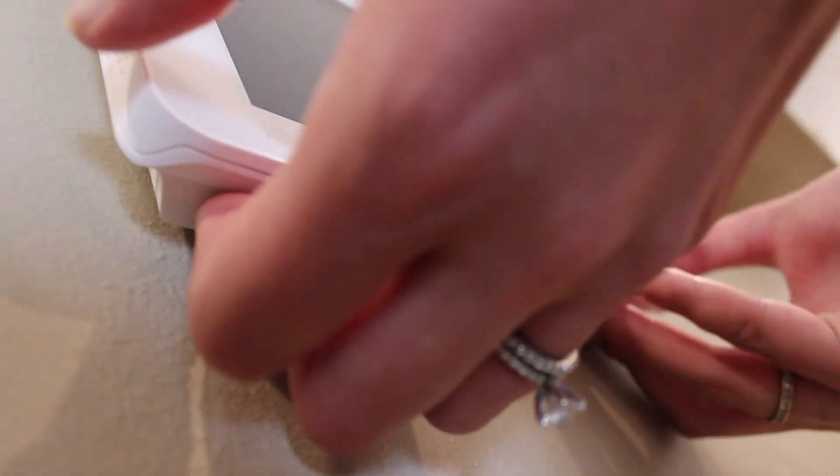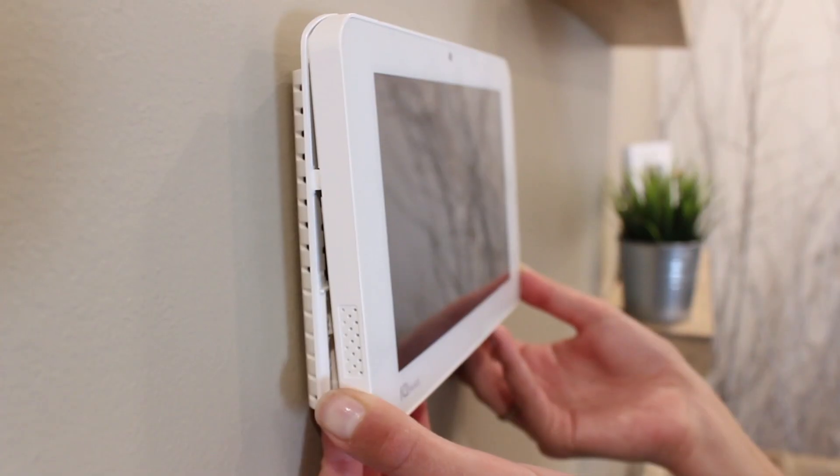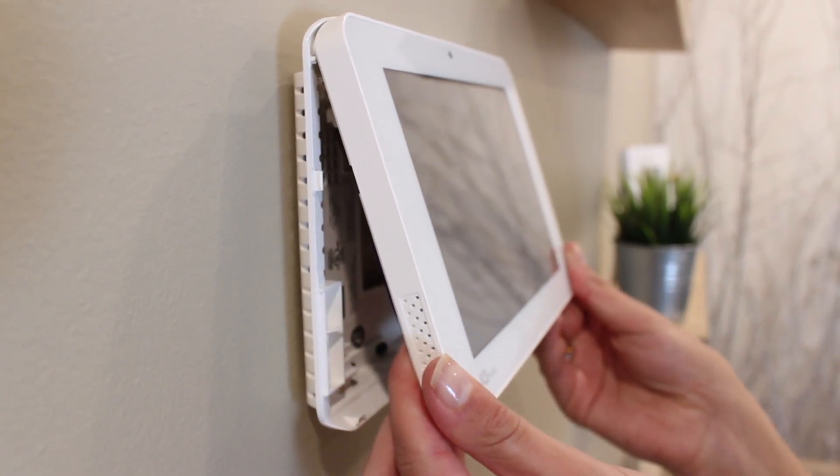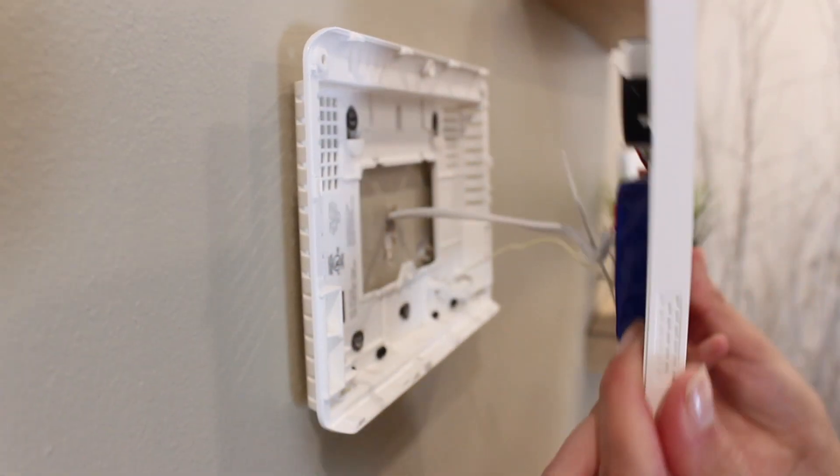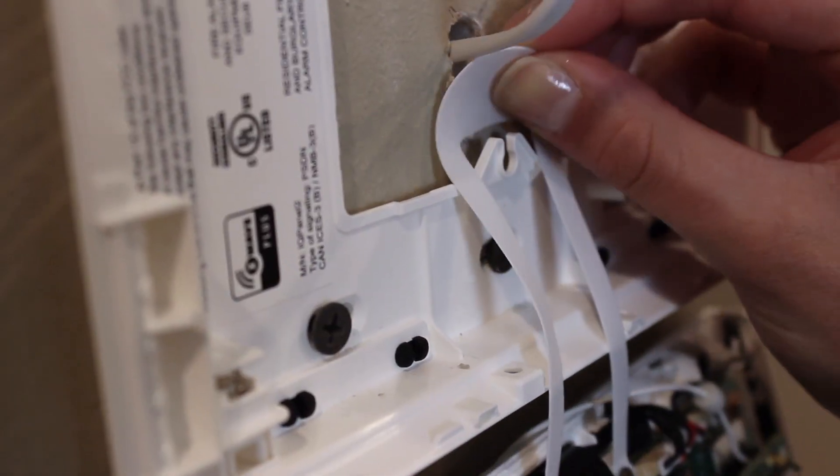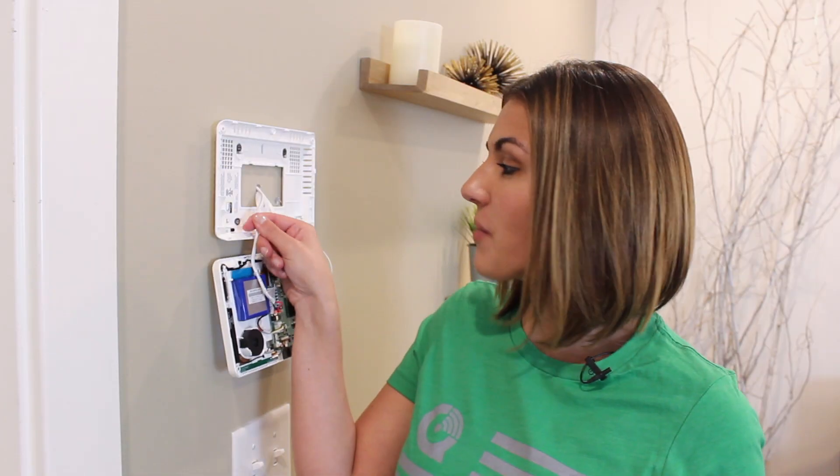Open the panel by pushing up on the two tabs, releasing the face from the back plate, then hinge it upward to disconnect it from the top. Use the provided hanging strap so it does not fall or hang from the power wire.